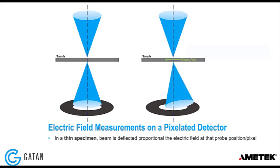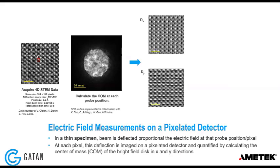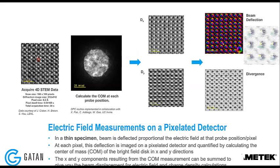The third analysis type is differential phase contrast imaging. If you have an electric field in a thin specimen, the beam is deflected as it passes through. By measuring this beam deflection using a large convergence angle, measuring the center of mass shift, you can calculate the beam deflection and divergence, and from those calculate the charge density and electric field in the sample.